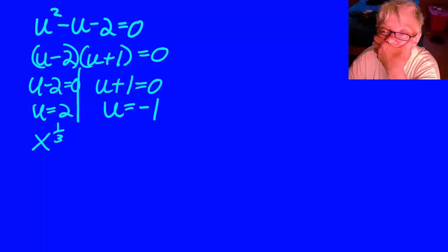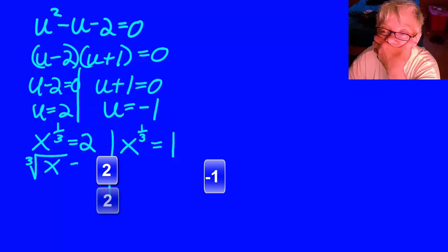u equals x to the 1 third. So x to the 1 third equals 2, and x to the 1 third equals negative 1. Well, what is x to the 1 third? It's the cube root of x. The cube root of x equals 2, and the cube root of x equals negative 1. Now all we have to do is solve these short little radical equations.